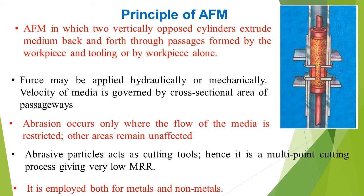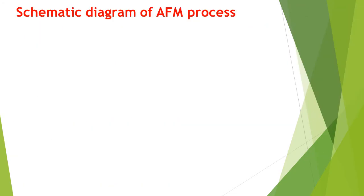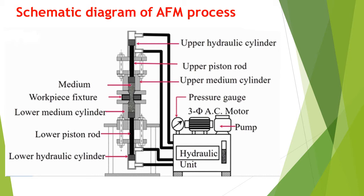It is employed both for metals and non-metals. The schematic diagram of the AFM process shows the hydraulic unit, pressure gauge, AC motor and the pump. It is connected to the upper hydraulic cylinder and lower hydraulic cylinder through four hoses. At the bottom of the upper hydraulic cylinder we have the upper medium cylinder, and at the top of the lower hydraulic cylinder we have the lower medium cylinder. In between both medium cylinders, we can place the workpiece fixture, and the medium is filled in the chamber.